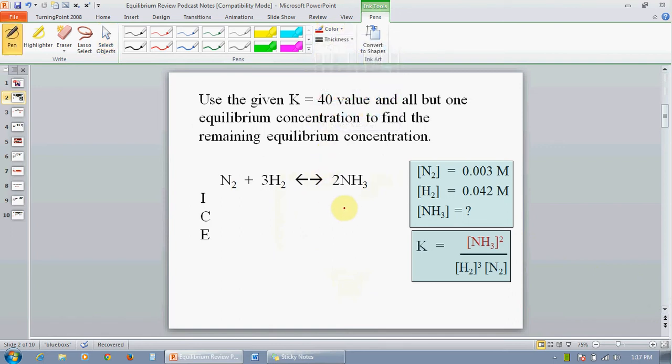The first type would be where you have been given all equilibrium concentrations except for one. It's extremely helpful to write the K expression and even to write ICE. If you recognize that at this point you've got 0.003 molar nitrogen and 0.042 molar hydrogen and you put them into the expression, you see that K, which is defined at equilibrium, you have everything you need except for the ammonia. So even though you don't need ICE,